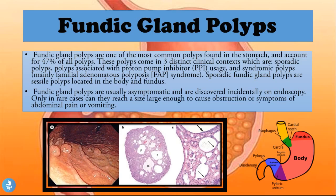The fundic gland polyps are one of the most common polyps found in the stomach, accounting for about 47% of all polyps. These polyps come in three distinct clinical contexts: sporadic polyps, polyps associated with proton pump inhibitor usage — in people taking PPIs for conditions such as GERD or gastritis — and syndromic polyps, mainly in people with familial adenomatous polyposis or FAP syndrome.